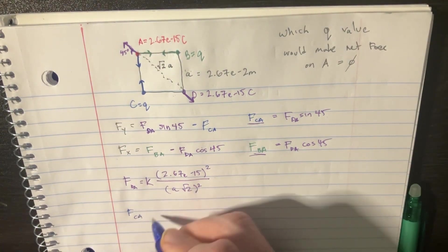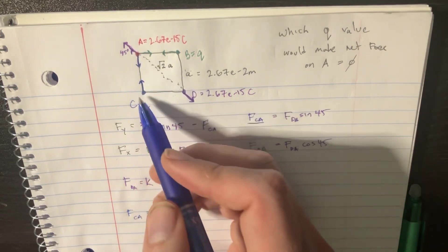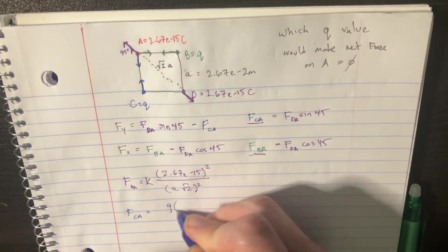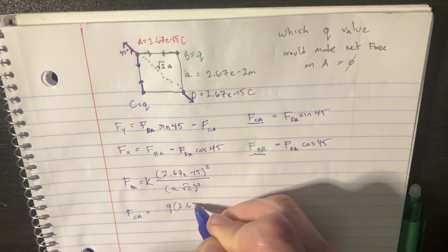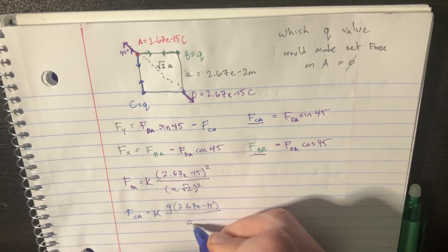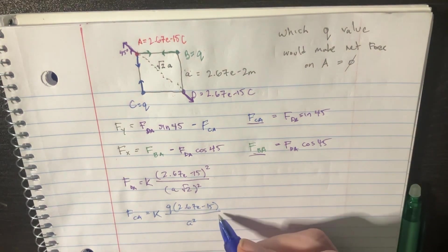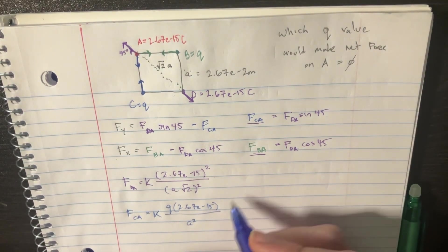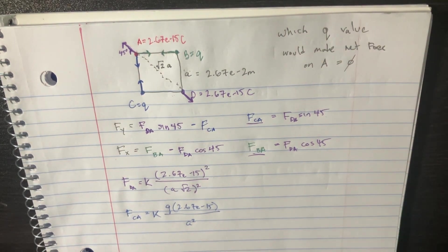So FcA is going to be equal to this one. That's Q times 2.67 E to the negative 15, divided by, throw K there, and then we got A squared. That's cool. And then, let's get this last one here.